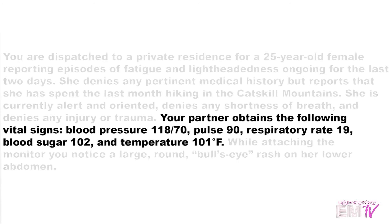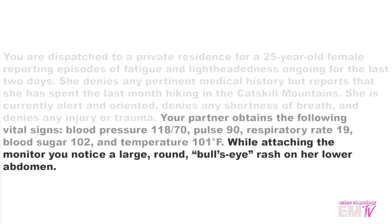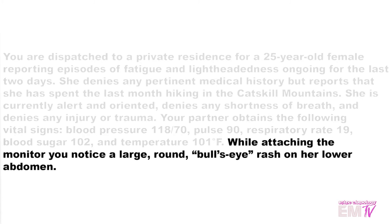Your partner obtains the following vital signs: blood pressure of 118 over 70, pulse of 90, respiratory rate of 19, blood sugar of 102, and a temperature of 101 degrees Fahrenheit. While attaching the monitor, you notice a large round bullseye rash on her lower abdomen.